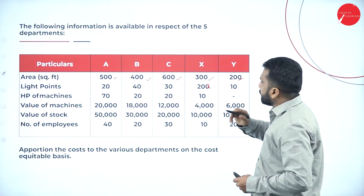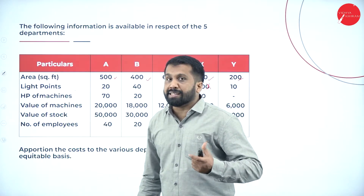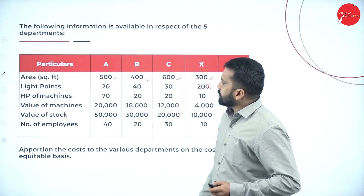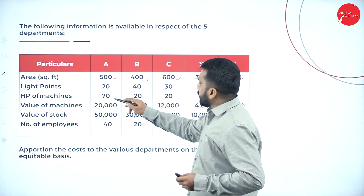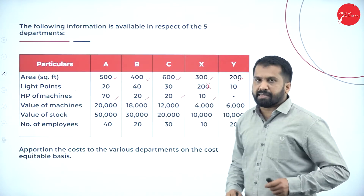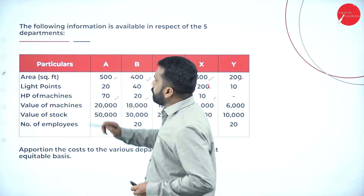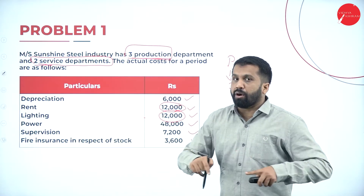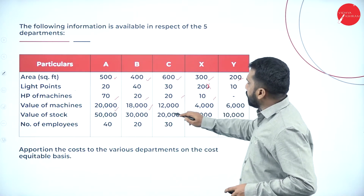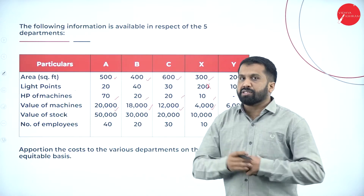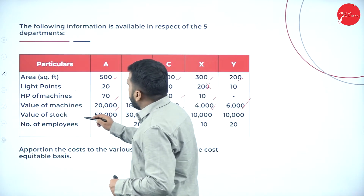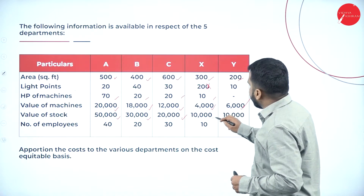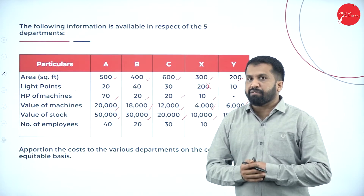Value of machine is used for depreciation: A is using 20,000; 18,000; 12,000; 4,000; 6,000. These are the bifurcations. Then value of stock: 50,000; 30,000; 20,000; 10,000; and 10,000. These are the bifurcations for fire insurance.